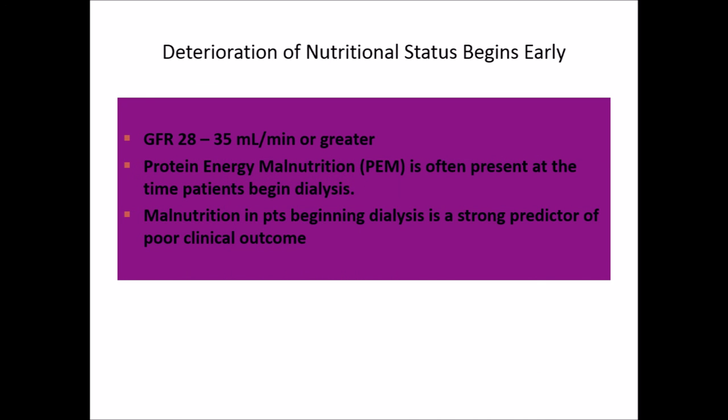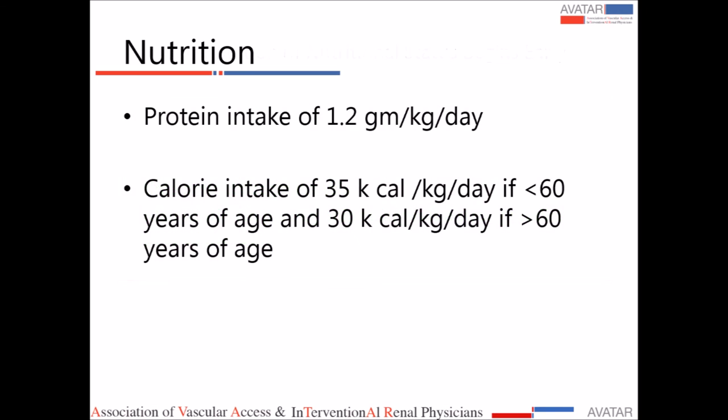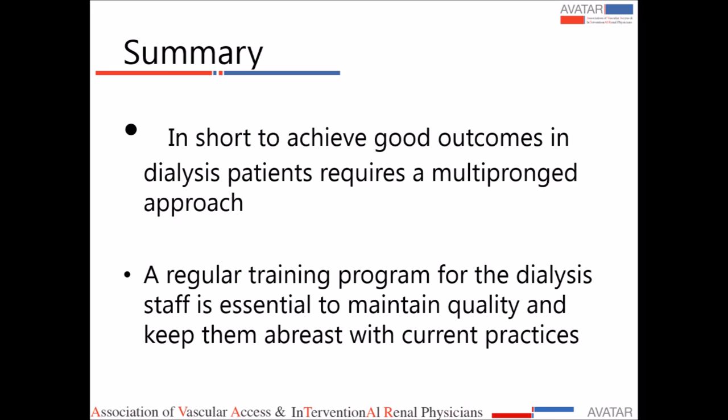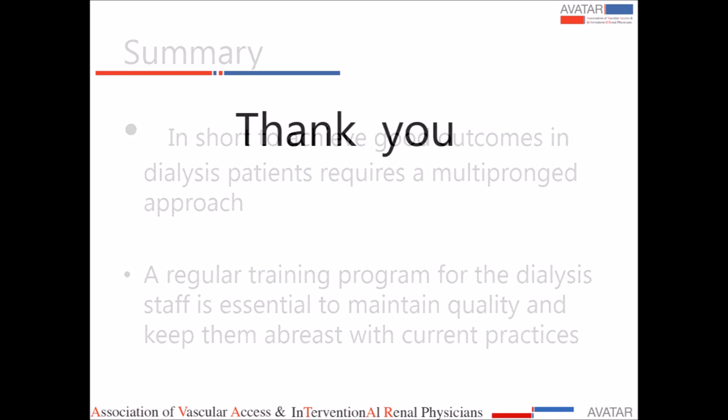Regarding nutritional status — protein energy malnutrition is often present when patients initiate dialysis, beginning as early as CKD stage 3 or 4, and is a strong predictor of poor clinical outcome. A protein intake of 1.2 grams per kilogram per day of high biological value and a calorie intake of about 30 to 35 kilocalories per kilogram per day are recommended. In summary, achieving good outcomes for dialysis patients requires a multi-pronged approach, and a regular training program for dialysis staff is essential to maintain quality and keep them abreast with current practices. Thank you.